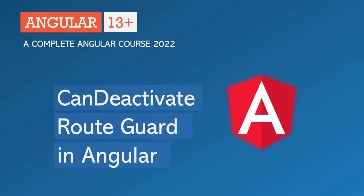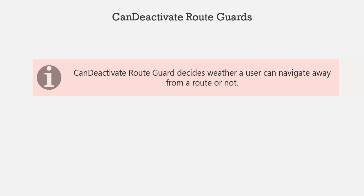In this lecture, you are going to learn about CanDeactivate route guard in Angular. The CanDeactivate route guard decides whether a user can navigate away from a route or not. A simple use case is when a user is entering some data in a form, fills the data, and then tries to leave the view without saving the work. In that case, we can use this CanDeactivate route guard to warn the user that he has not saved his data, and give him a chance to cancel the navigation.